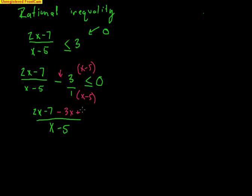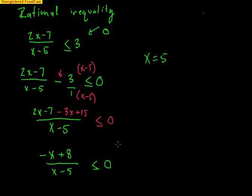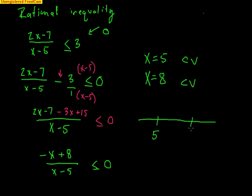On top I get negative x plus 8, all over x minus 5, less than or equal to 0. With rational functions, critical numbers come from both the top and the bottom. The first critical value is x equals 5 — I'm not allowed to equal 5 because it makes a zero in the denominator, but it's still a critical value. The other critical value is x equals 8 — plugging in 8 makes negative 8 plus 8 equal to 0 on top. I am allowed to be 8 because the inequality says less than or equal to 0. On the number line, x equals 5 gets an open dot and x equals 8 gets a filled dot.